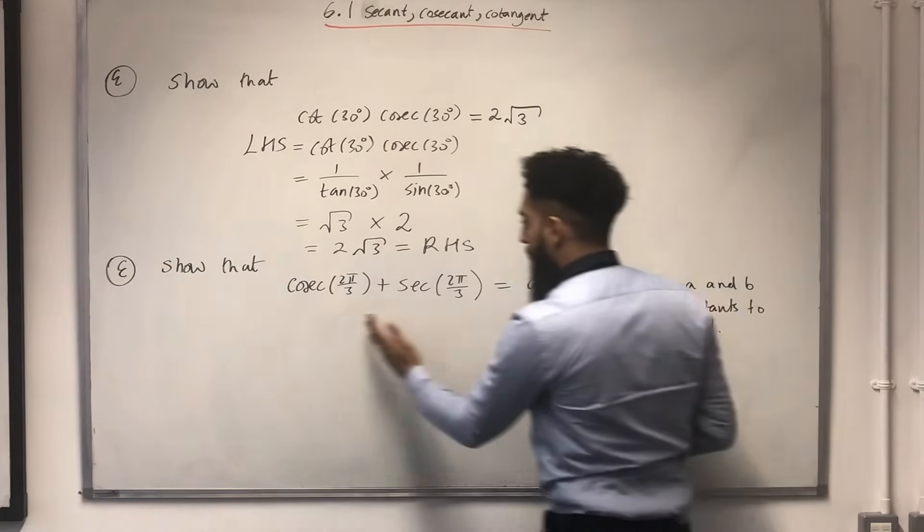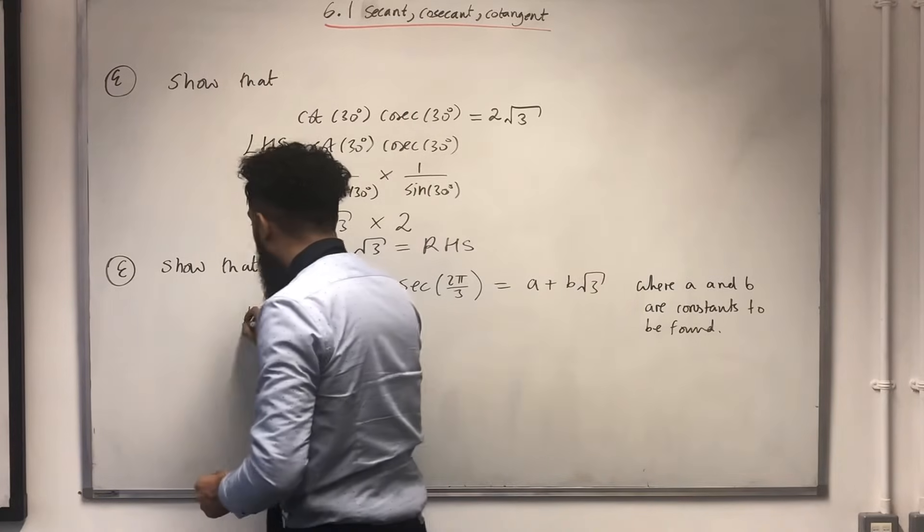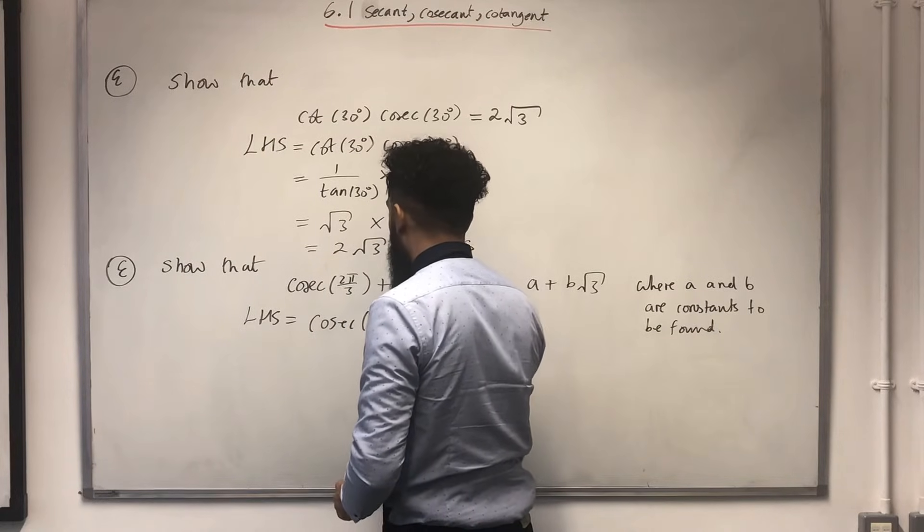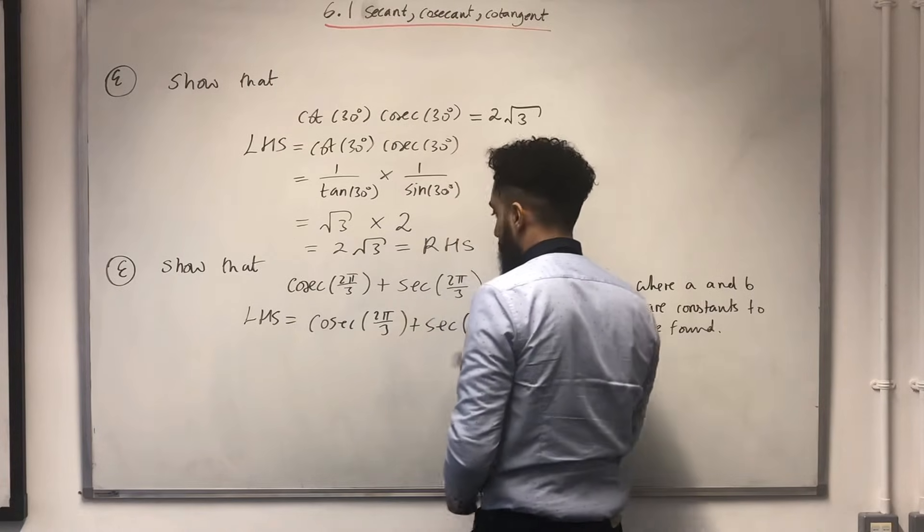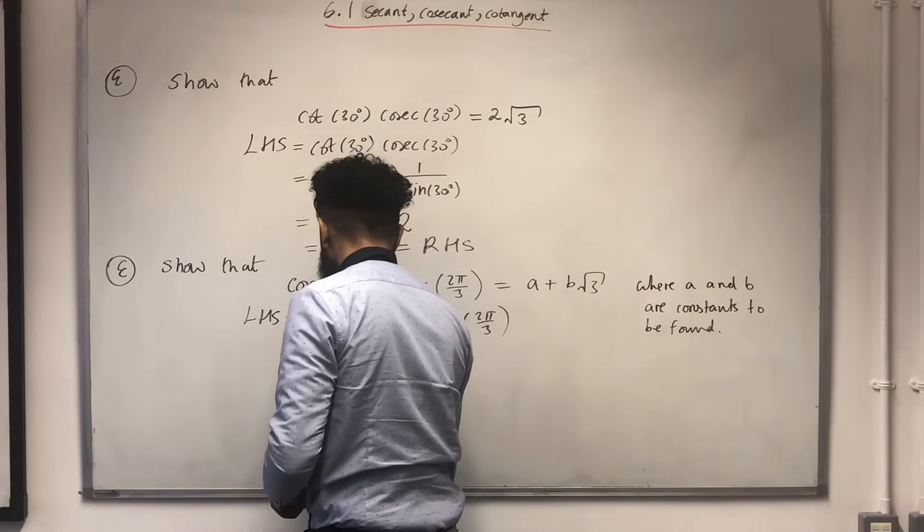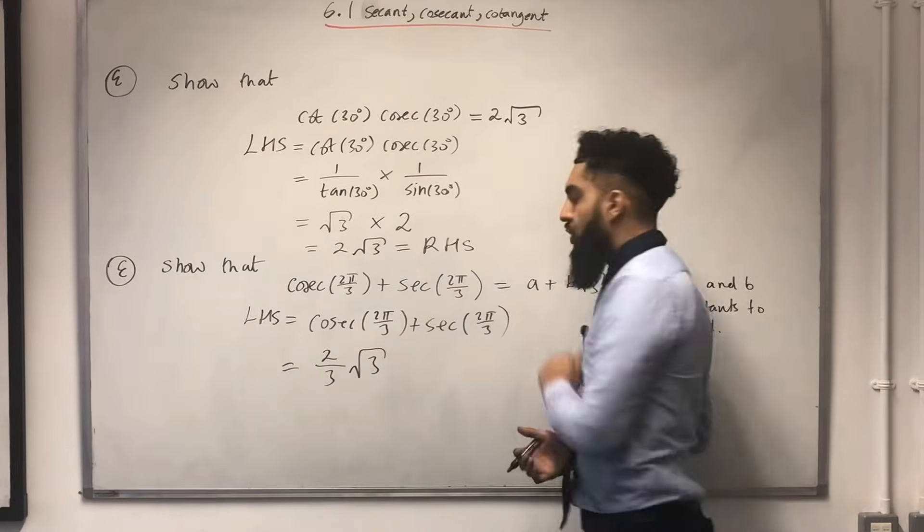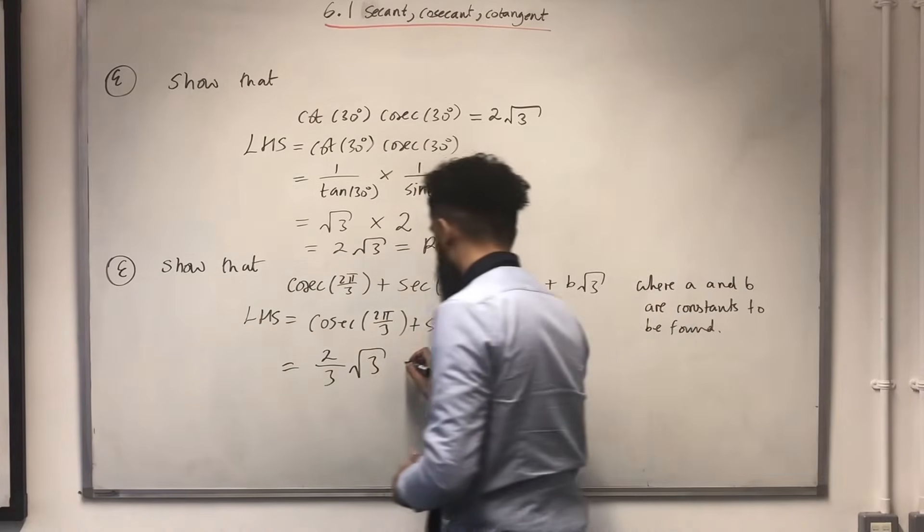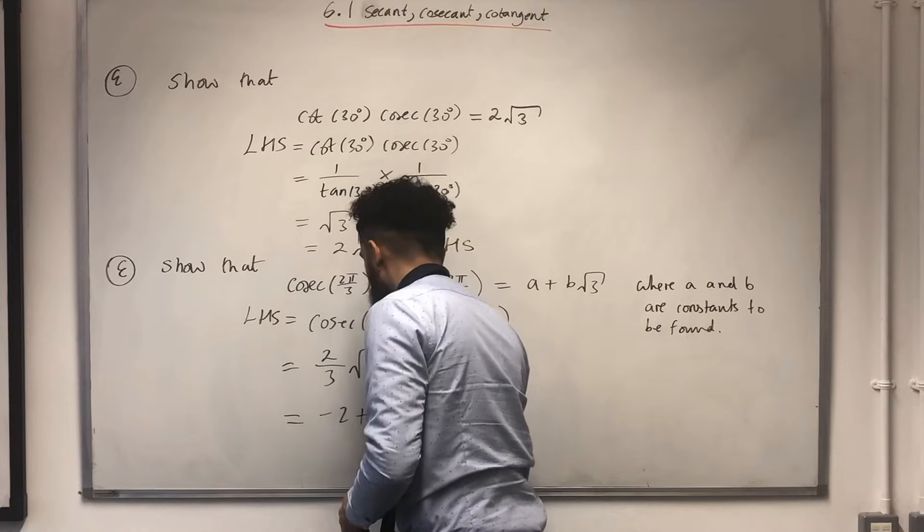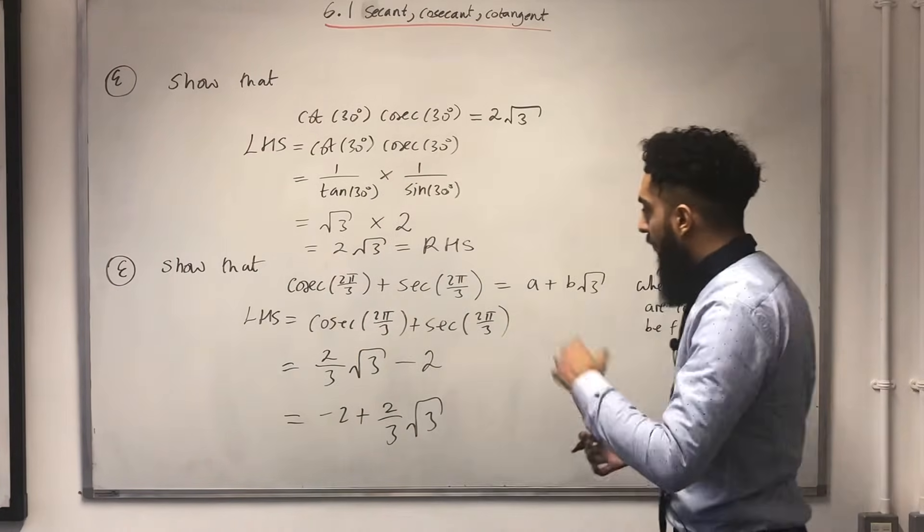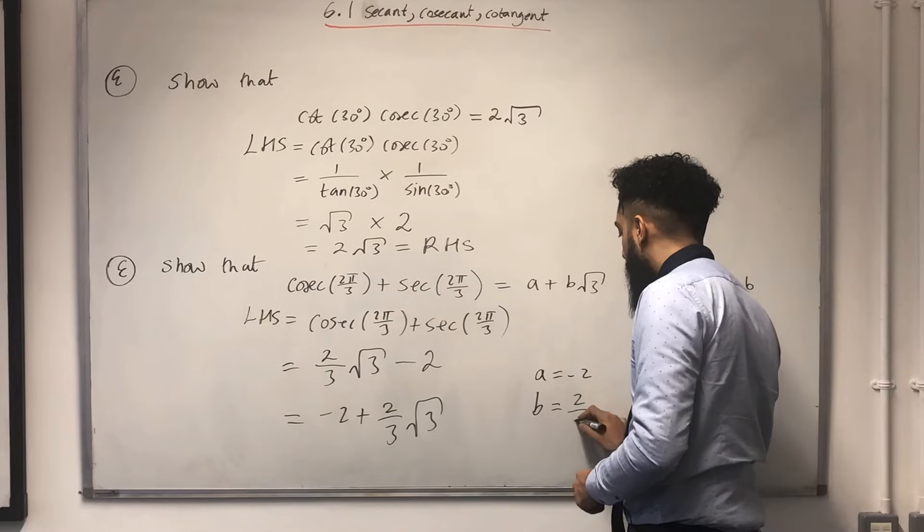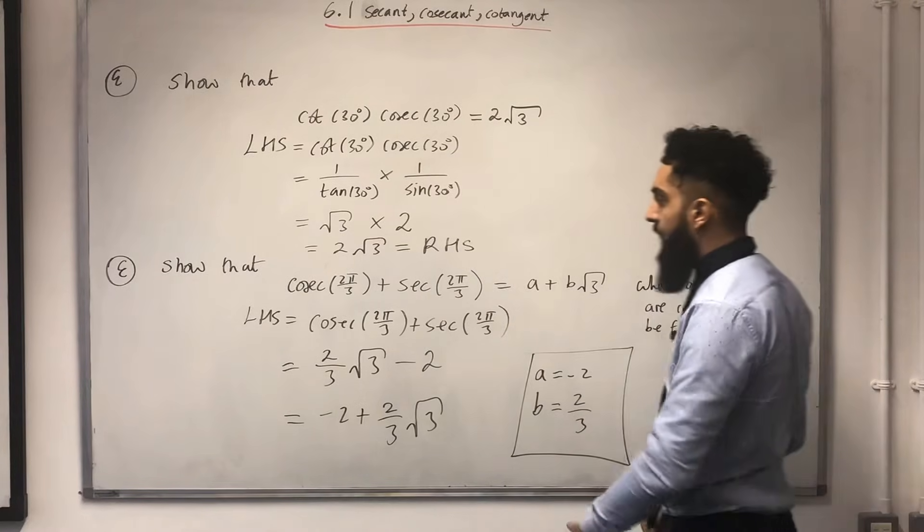Let's have a look at the second exam question. I start off by writing LHS, left-hand side, which is this part over here, cosec(2π/3) plus sec(2π/3). Now, cosec(2π/3), I know it's 2 over 3√3. So, I can rewrite this as minus 2 plus 2 over 3√3, okay? And then read off my A and B. So, my A is minus 2 and my B is equal to 2/3. And that completes this question.